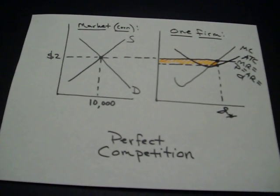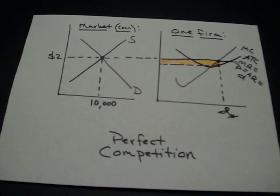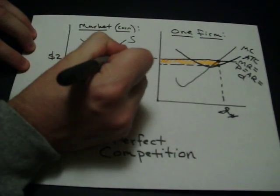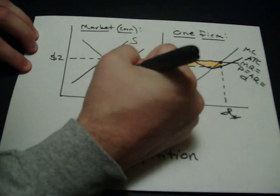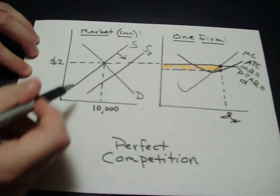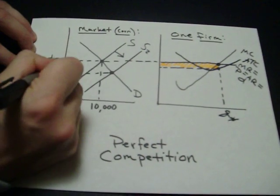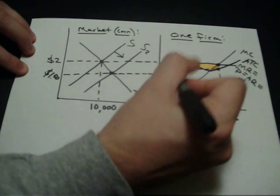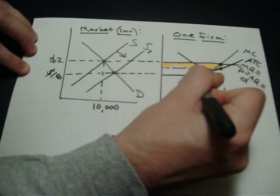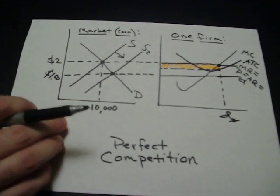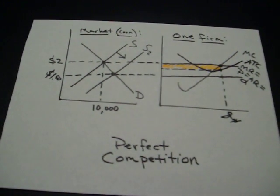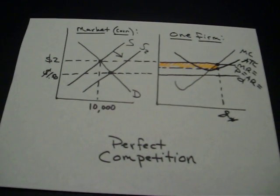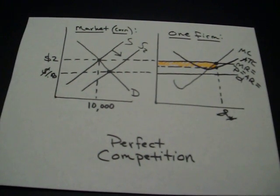What happens next? Other entrepreneurs see the firm making a profit and enter the market in the long run. Entry looks like an increase in supply. Now we get a new equilibrium price driven down to maybe $1.50. The firms accept that price. Here's the new MR = P = AR = D line. Now it's below ATC, so there's a loss. Businesses would exit in the long run. In the long run, there's no profit, no loss, because of constant entry and exit.